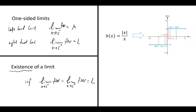A typical example: if x goes to 0 from the left, the value of h(x) = |x|/x is -1. But if x goes to 0 from the right, the value is 1. Since they are not equal to each other, the limit does not exist.